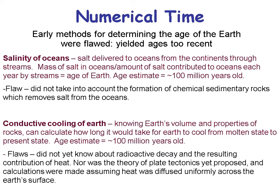Early methods for determining the age of the Earth were flawed — they yielded ages that were too recent. One method used the salinity of the oceans: measure how much salt is delivered to the ocean from the continents through streams, then estimate Earth's age. The flaw was it didn't account for the formation of chemical sedimentary rocks, which remove salt from the oceans. You can go to Kansas and see salt deposits that were put there in ancient oceans, and salt deposits trap oil in places like the Gulf of Mexico and Angola.